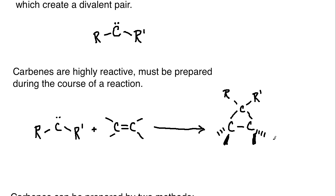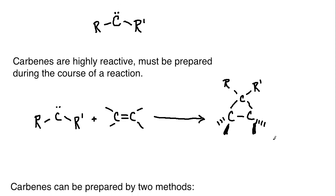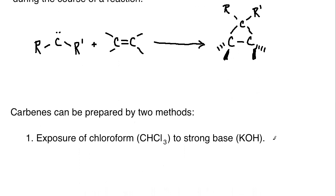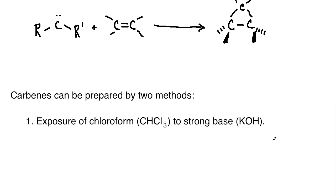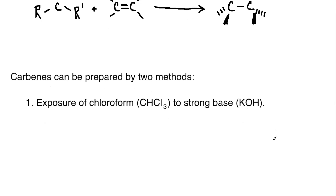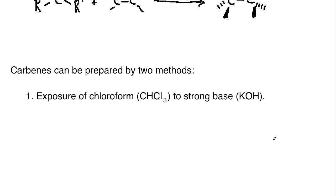That would be the product. So, you would get a cyclopropane of sorts. It could be just cyclopropane if we have two hydrogens there. Those could be halogens, which we're going to see in a minute, or they could be some other sort of group. But one of the things we have to consider is how we're going to be able to prepare carbenes.